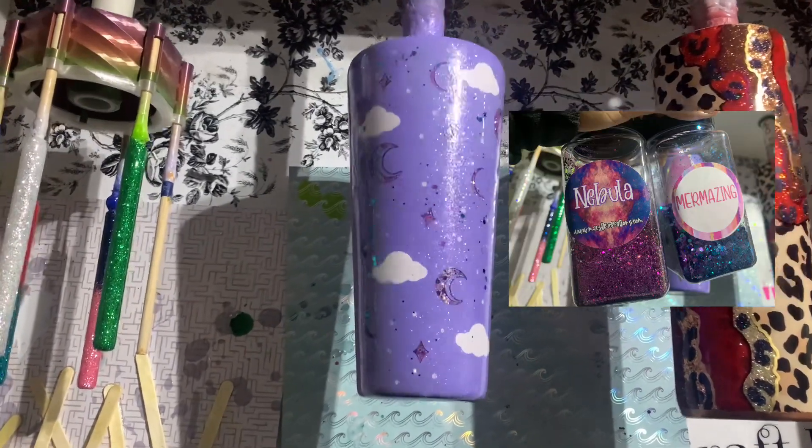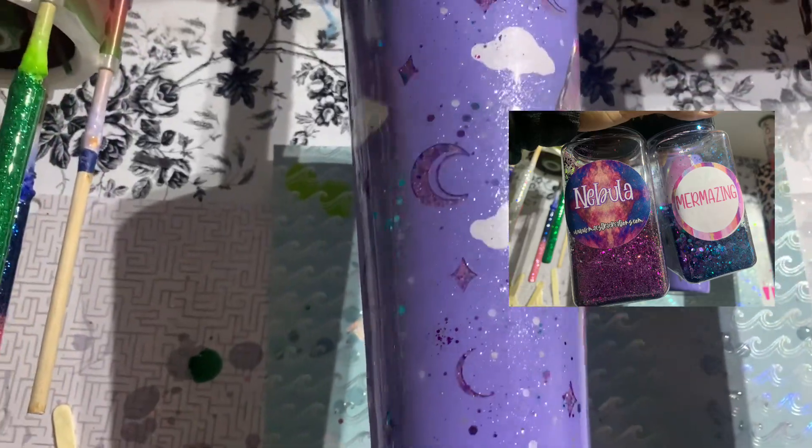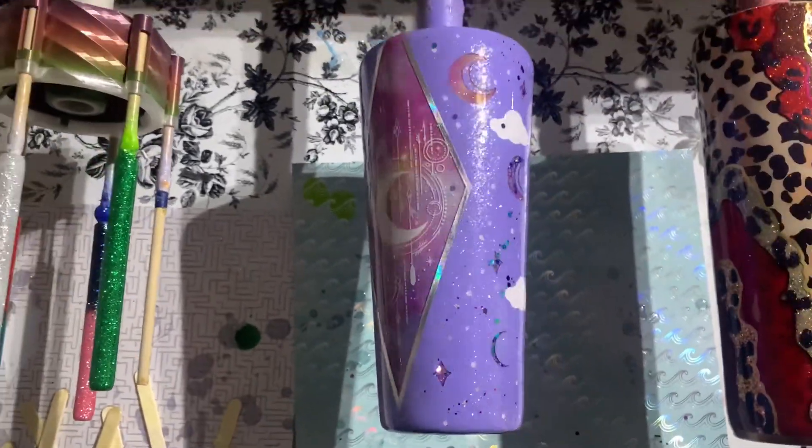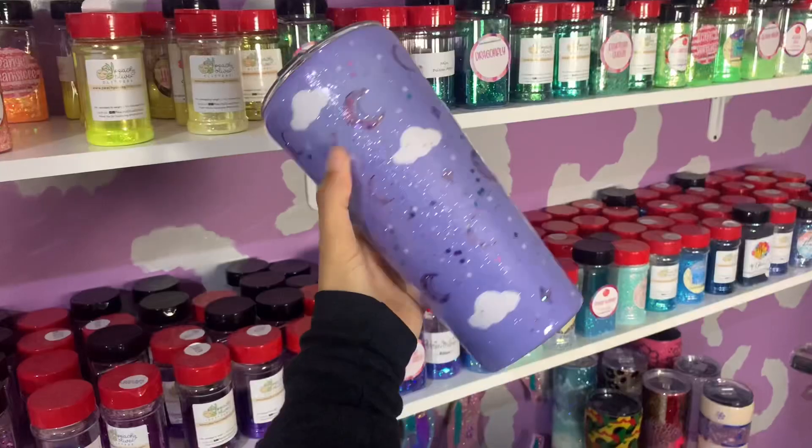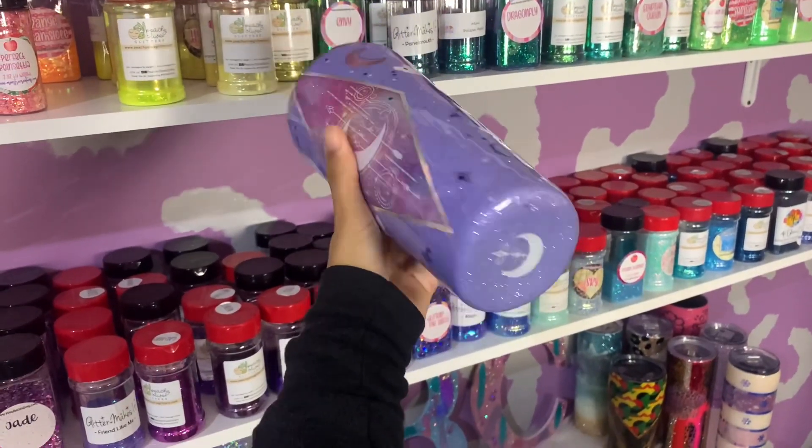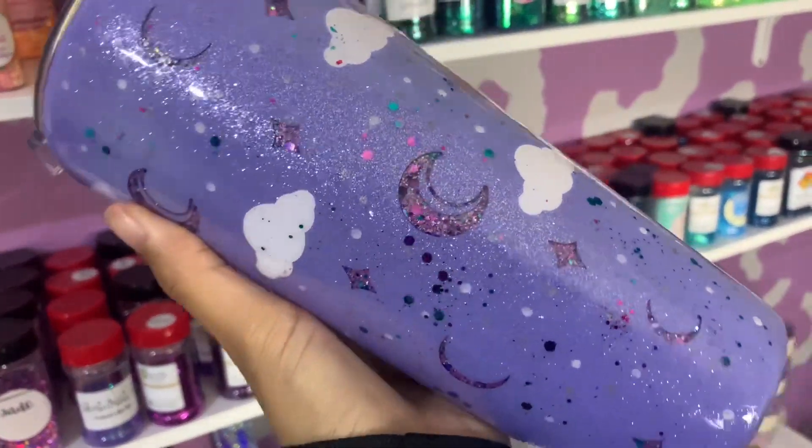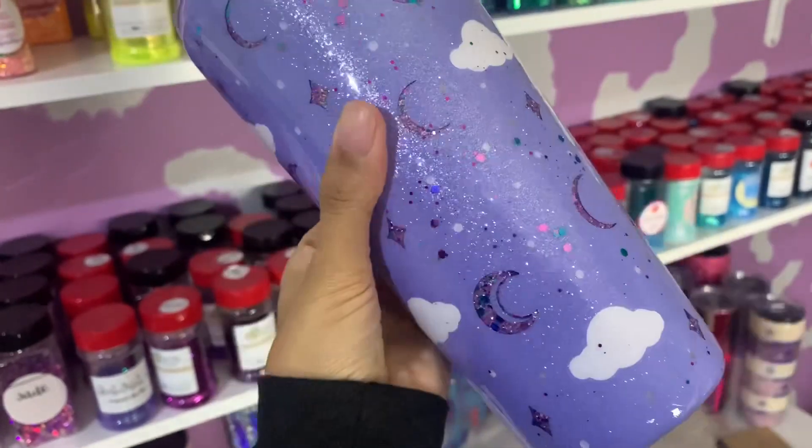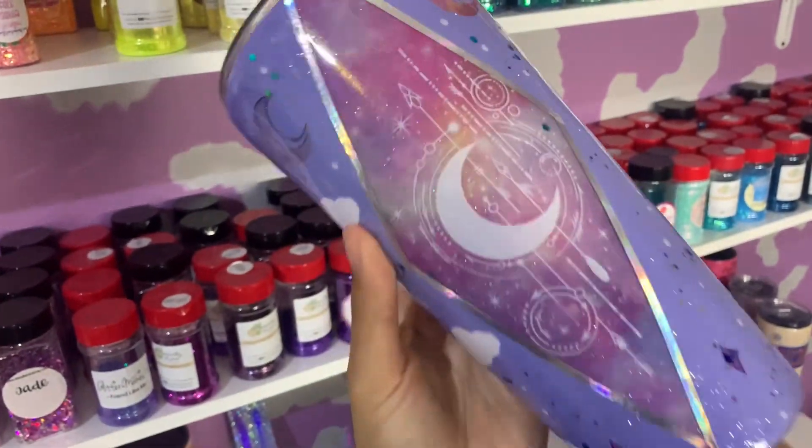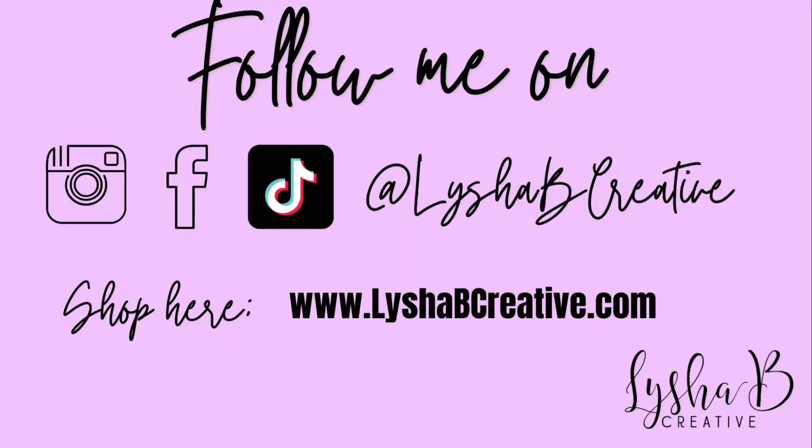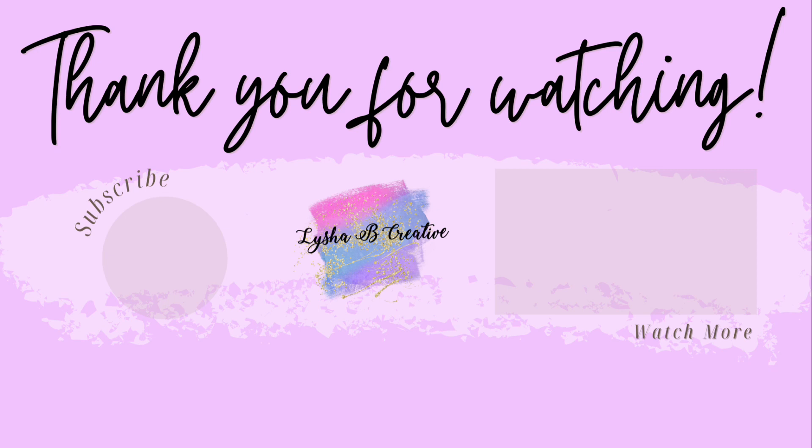That went back on the turner for two final coats of epoxy. In my first coat I did add a little bit of Nebula and Mermazing to the top coat just to give it a little extra sparkle, because why not? This is the final look of the cup. I really hope you guys enjoyed today's tutorial and I hope it inspires you to create something similar or recreate this tutorial. Make sure to give this video a huge thumbs up and subscribe to my channel and I'll see you guys again soon.